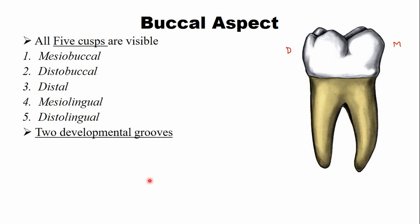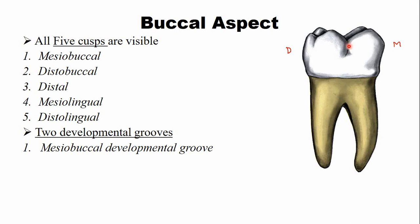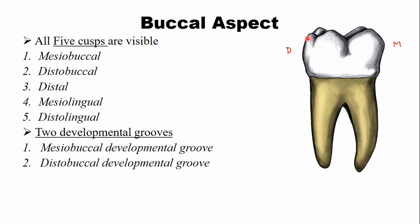There are two developmental grooves visible from the buccal side. The first is the mesiobuccal developmental groove, present between the mesiobuccal and the distobuccal cusps. The second is the distobuccal developmental groove, present between the distobuccal and the distal cusps.